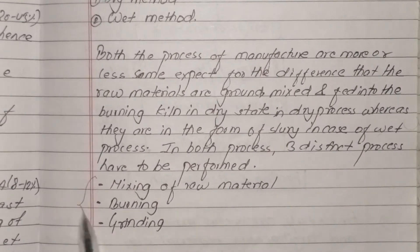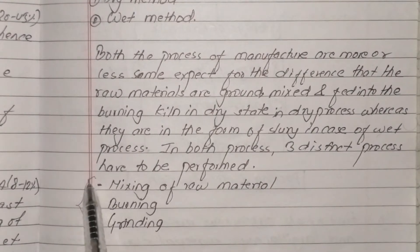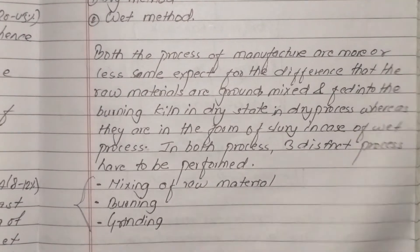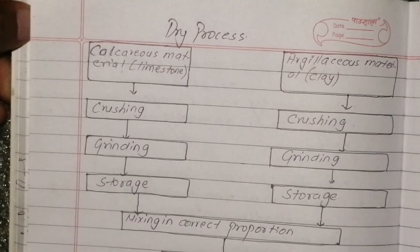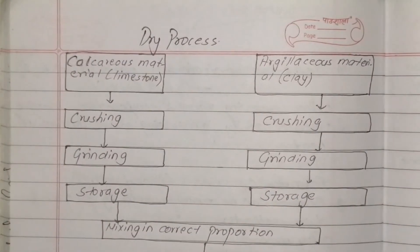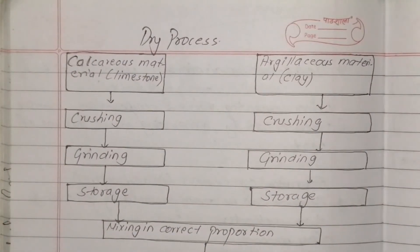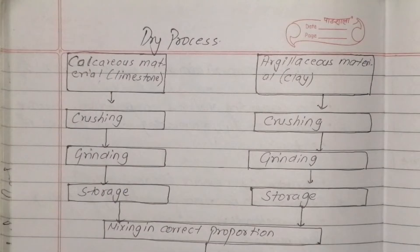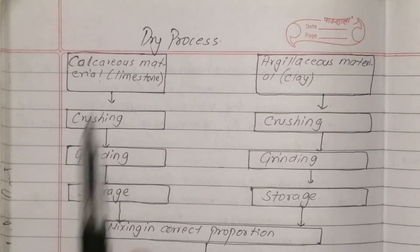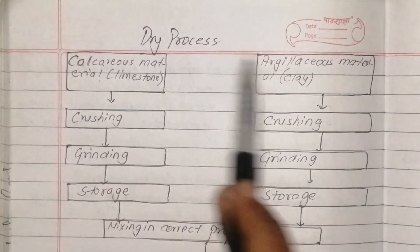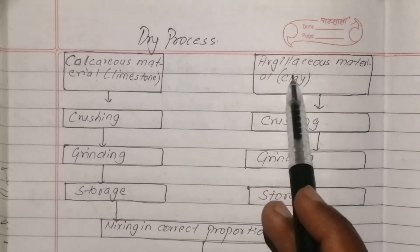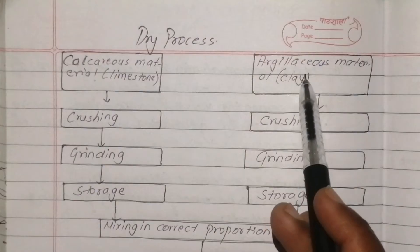In the dry process, raw materials including limestone and clay are excavated and crushed. A figure is used to explain the dry process where limestone and clay undergo initial crushing and investigation.